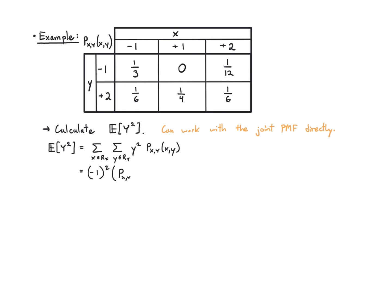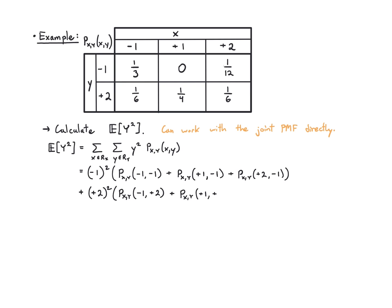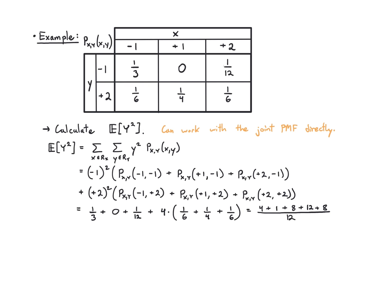I get (−1)² times p_{xy}(−1,−1), using all three entries where y = −1, plus (2²) times all entries in the second row where y = +2. Substituting the table values: 1/3 + 0 + 1/12 + 4·(1/6 + 1/4 + 1/6). Combining: (4 + 1 + 8 + 12 + 8)/12 = 33/12 = 11/4.